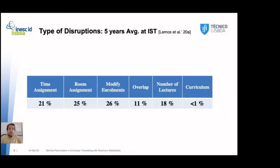So, there's a study published in the Journal of Scheduling that analyses the 5 years of disruption at IST. So, we can see that changes in curriculum during this period were rare, and changes in overlap constraints and number of lectures are not that important. The most important disruption is modifying enrollments that can be explained by the fact that students change their enrollments frequently as they can choose their own elective courses. And that normally changes here after year. The two other major disruptions are changes in time assignments and room assignments. Please note that this study is before COVID, so these numbers are likely to grow.